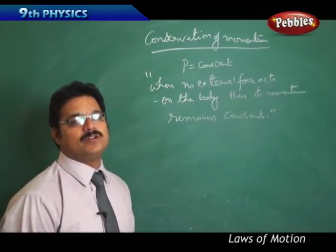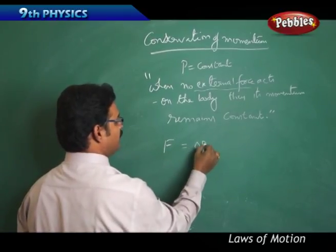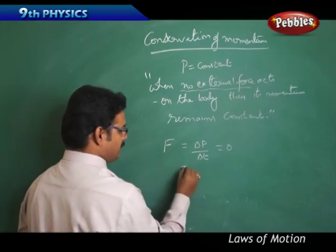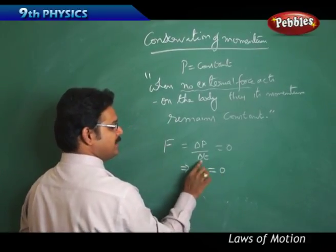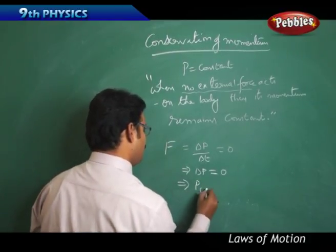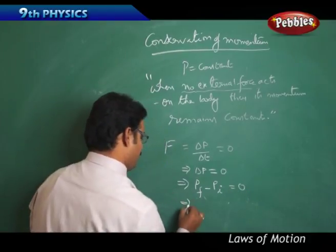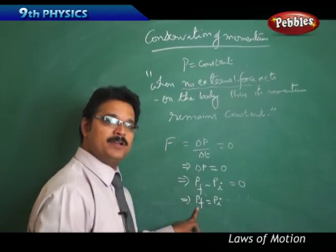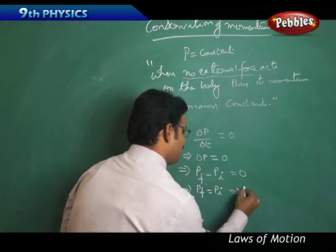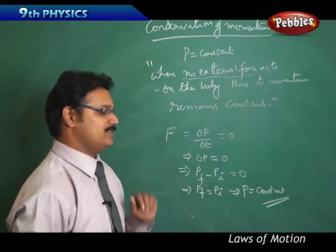The conservation of momentum principle says that when no external force acts on a body, its momentum remains constant. Let us see how. According to Newton's second law, F equals delta P by delta T. If no external force acts, F equals zero. Then delta P by delta T is also zero, which implies delta P equals zero. Delta P is the change in momentum, meaning final momentum minus initial momentum equals zero. This implies PF equals PI — final momentum equals initial momentum. So momentum never changes; momentum remains constant when F equals zero. That is conservation of momentum.